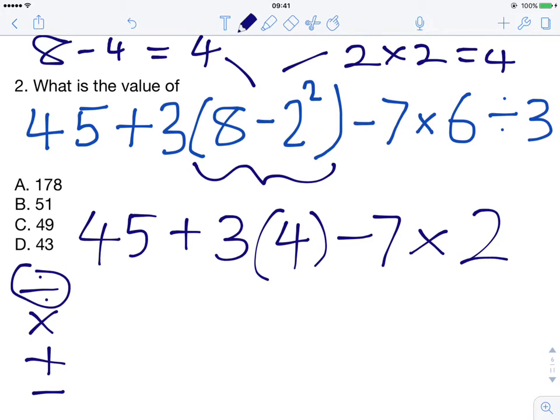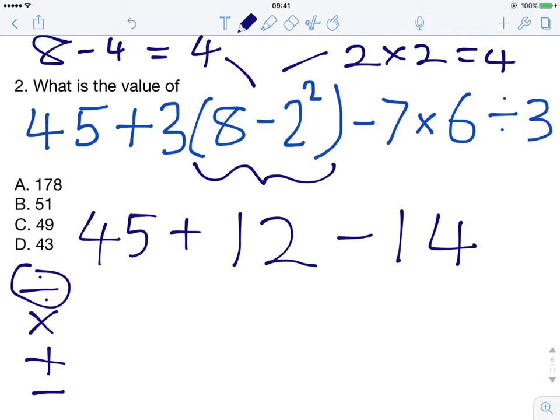Then we'll look for any multiplication. We have 7 multiplied by 2, which is, as we recall from our timetable, 14. Let's replace that. And whenever you see brackets around a number with another number on the outside, this is also a multiplication. 3 times 4 is 12. Let's replace this with 12. Now all we have here is addition and subtraction.